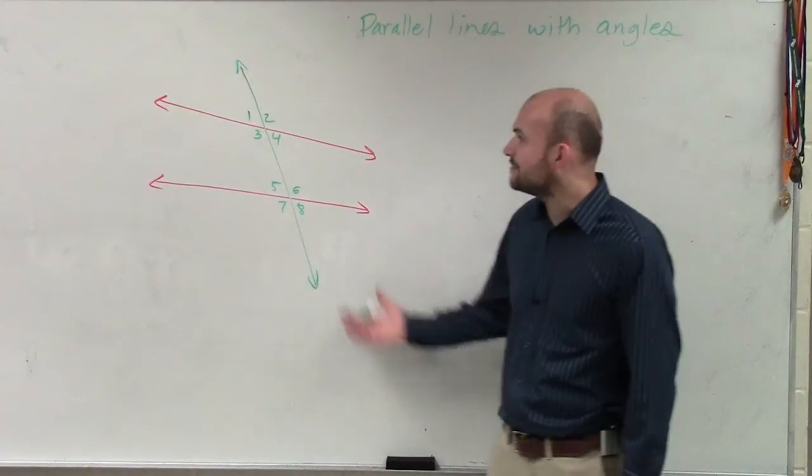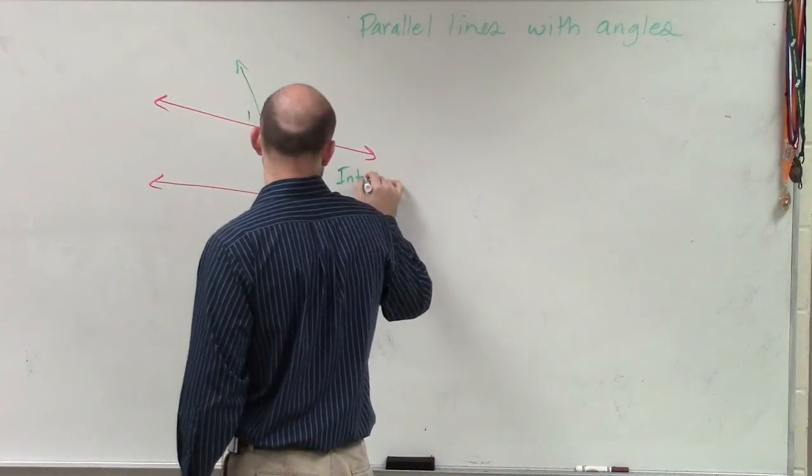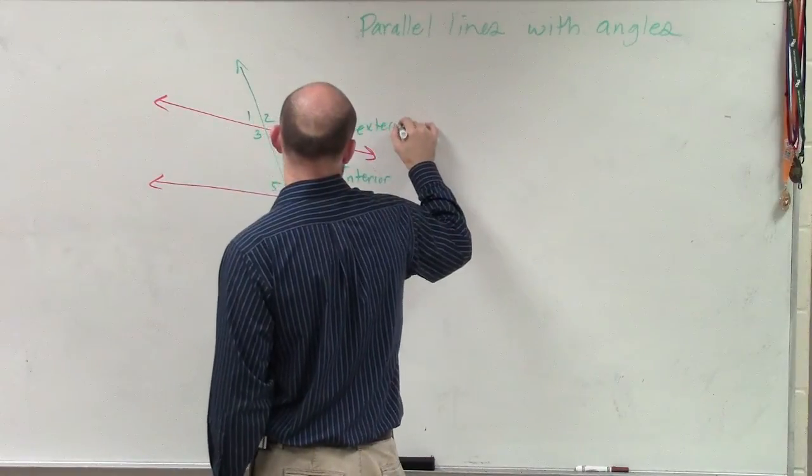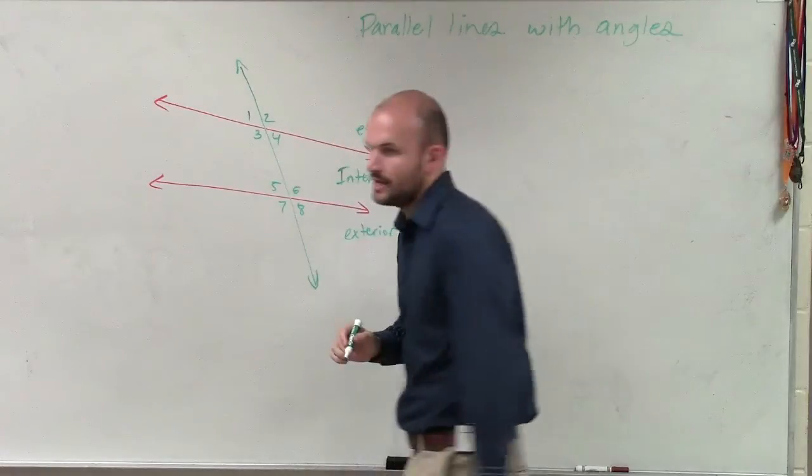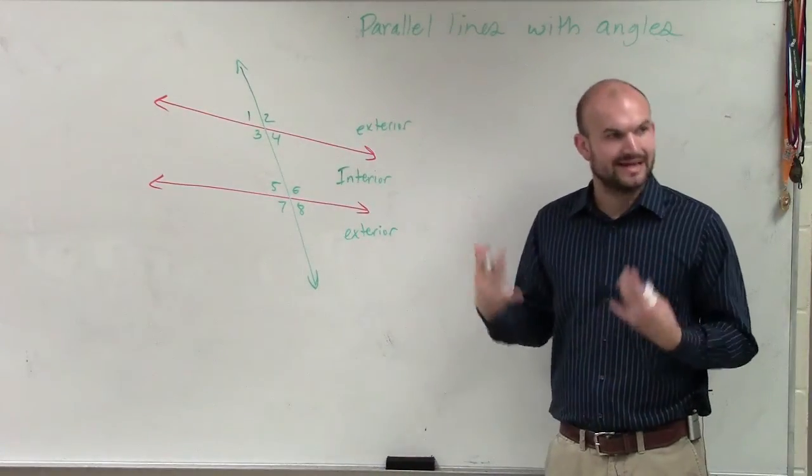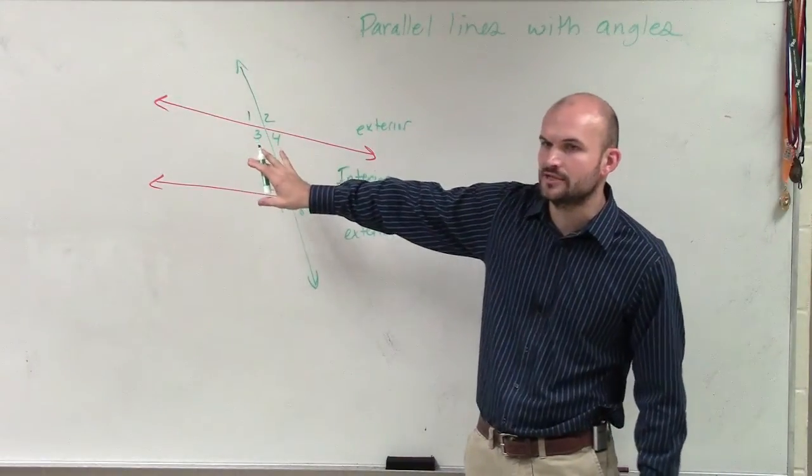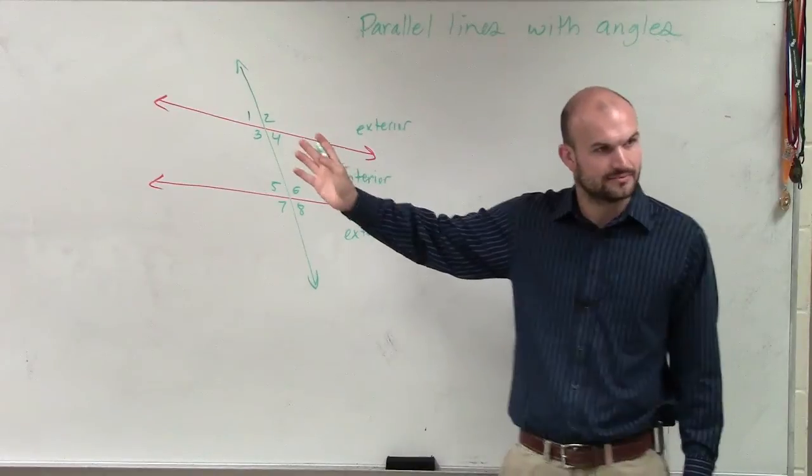Then, the next thing is we also looked at this and we say, all right, now we have interior and exterior. Do you guys see that when we have interior and exterior, right? Because the interior are in between our two lines and the transversal, and the exterior are on the outside. Make sense? Yes. OK.